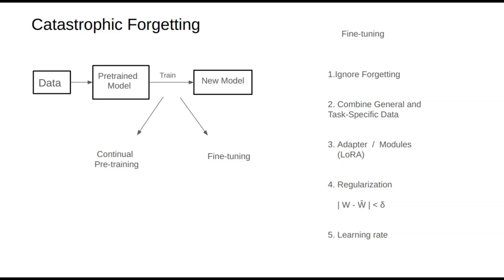Catastrophic forgetting is a complex and challenging issue without a definitive solution, often requiring trial and error. However, it's a problem that must be taken seriously, as it can be one of the most costly issues in model training — especially when fine-tuning with data that diverges significantly from the model's original domain, which can lead to more severe forgetting.